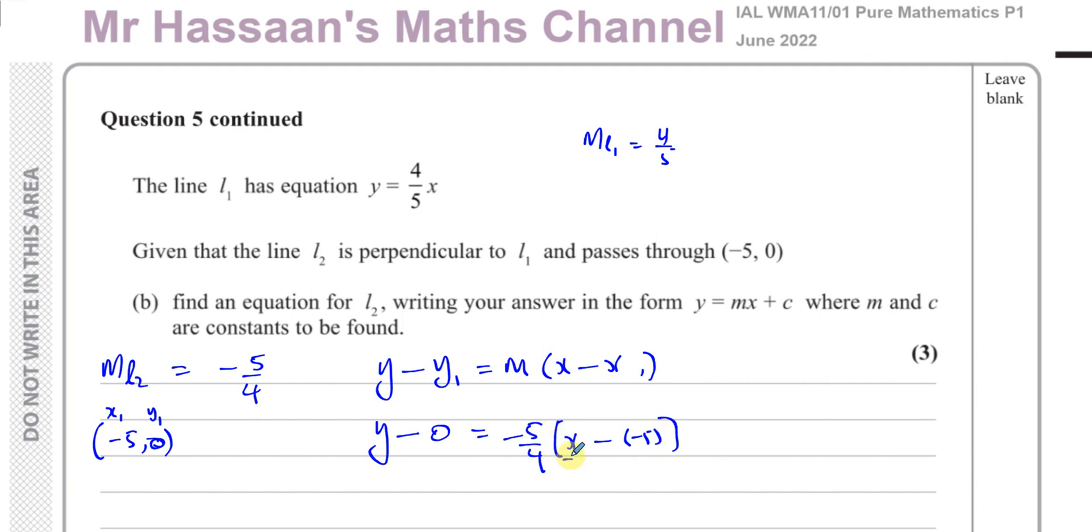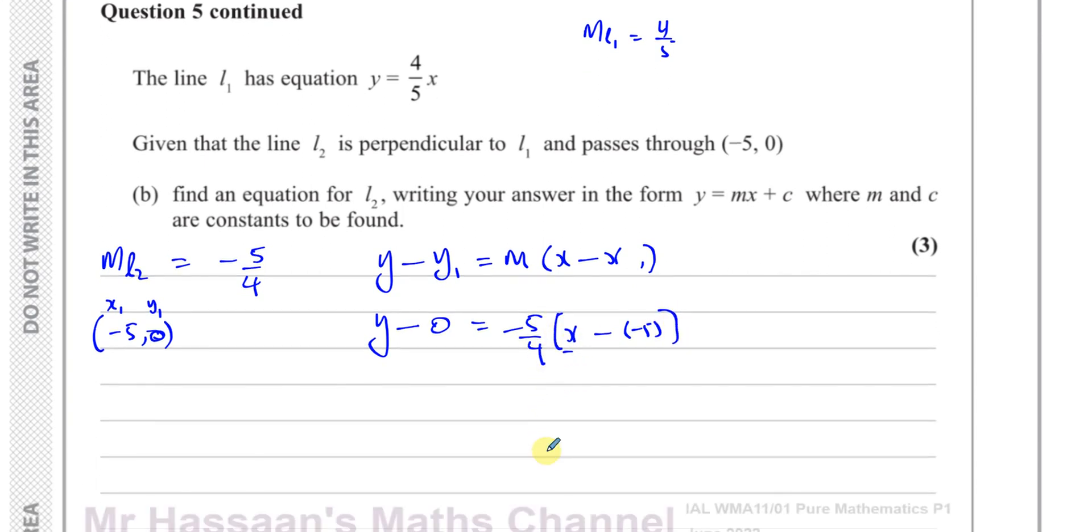And we'll end up here with Y equals minus 5 over 4 times X plus 5. So Y equals minus 5 over 4X minus 25 over 4. That's the equation of the straight line in the form required, Y equals MX plus C.